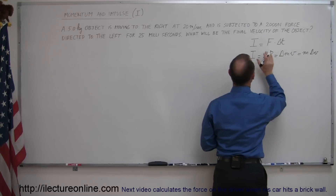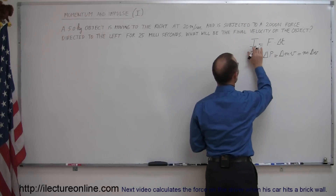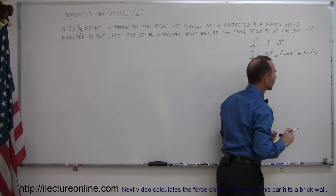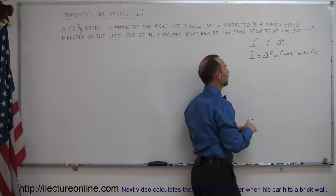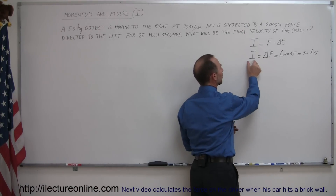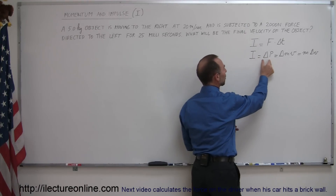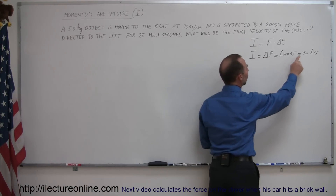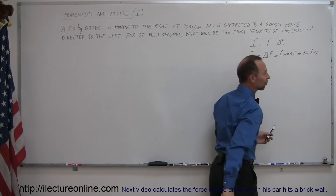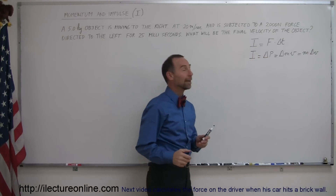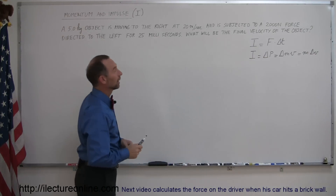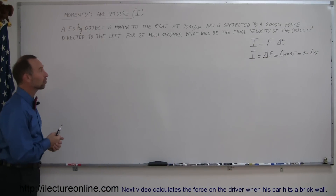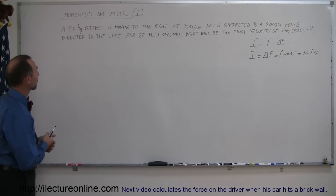So you can see that an impulse — which is a force applied to an object for a certain amount of time — can also be defined as a change in momentum, which means it's the change in the velocity of an object with a certain mass m. Here's an example to illustrate that.